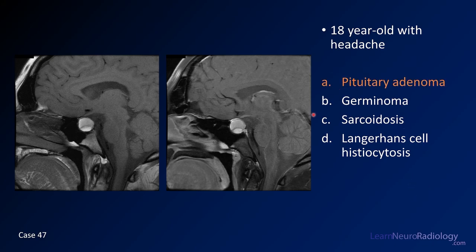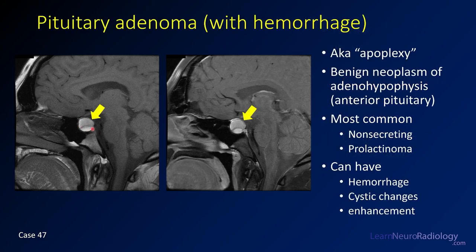This is a case of pituitary adenoma. On pre-contrast imaging you've got a T1 hyperintense, somewhat heterogeneous mass with septations. There's a thin rim of enhancement on post-contrast, and it is replacing the pituitary with expansion of the sella. This is a pituitary adenoma with hemorrhage — pituitary apoplexy. Most commonly these are non-secreting or prolactinoma. They're frequently heterogeneous with cystic changes, and the T1 hyperintensity here is likely from hemorrhage.